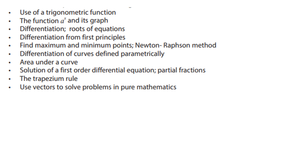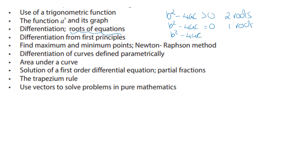Differentiation and roots of equations: when you differentiate and equate to zero, you're finding stationary points. If you're looking at where things intersect, take everything to one side and look at roots where it equals zero. For roots of equations, look at the discriminant b² - 4ac: if bigger than zero you have two roots, if equal to zero you have one root, and if less than zero you have no real roots - this is for a quadratic.